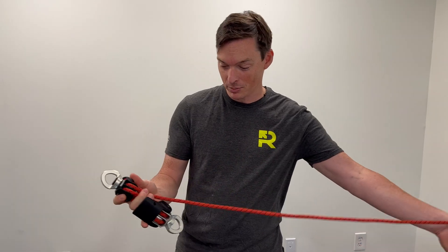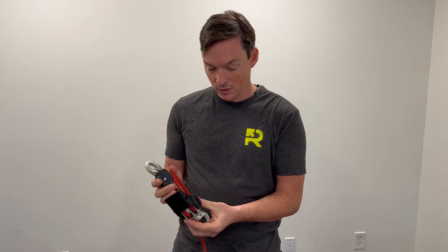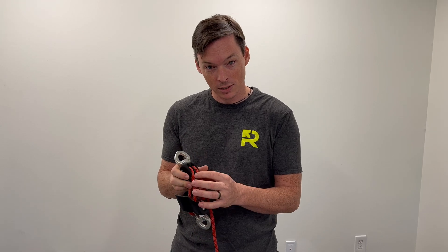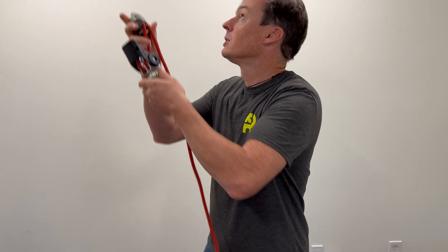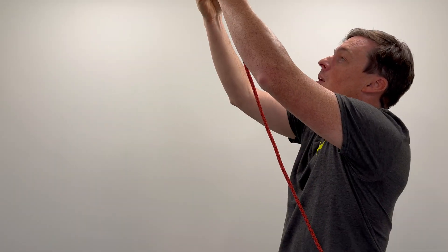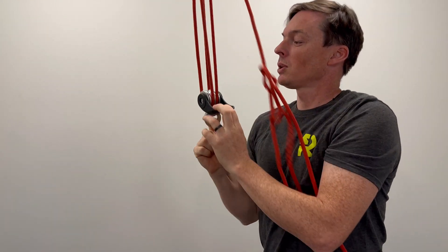It's really similar to the Aztec you'd be familiar with. The big difference is instead of soft prussics for progress capture, this uses a mechanical progress capture. To pull, it's just this lever arm here, and you'll hear the ratcheting noise as it goes up.